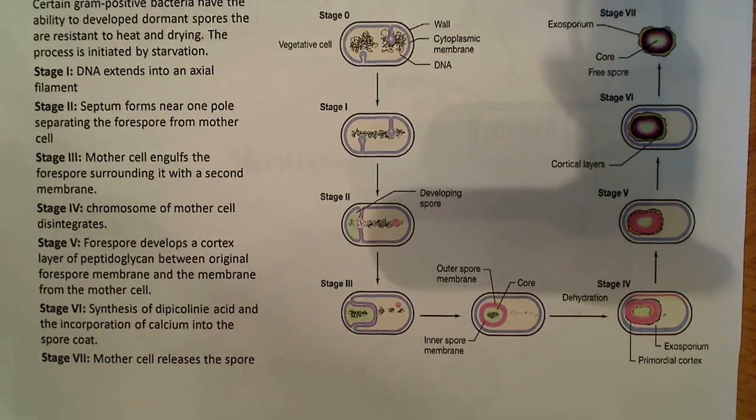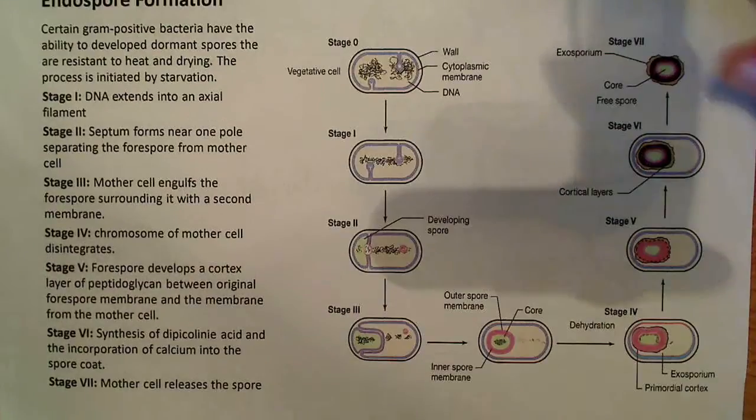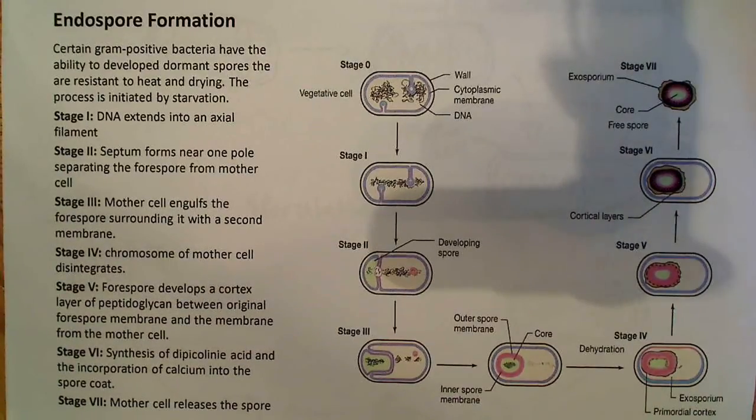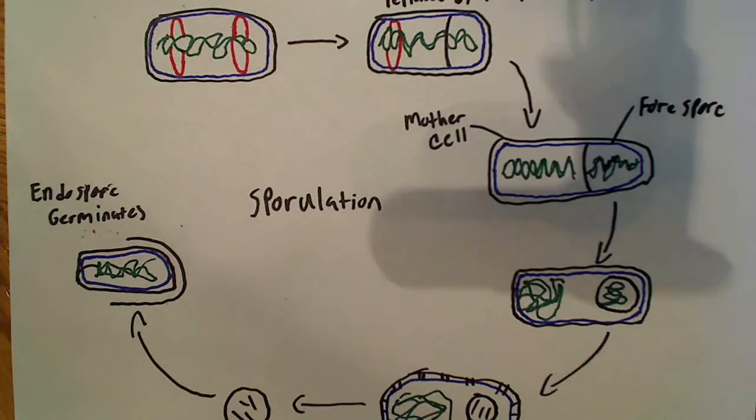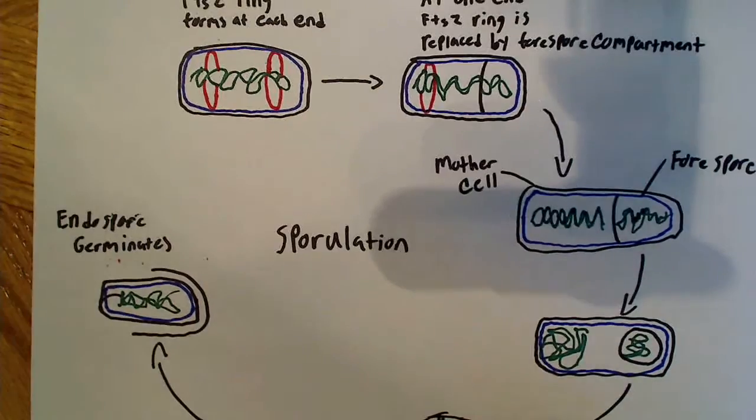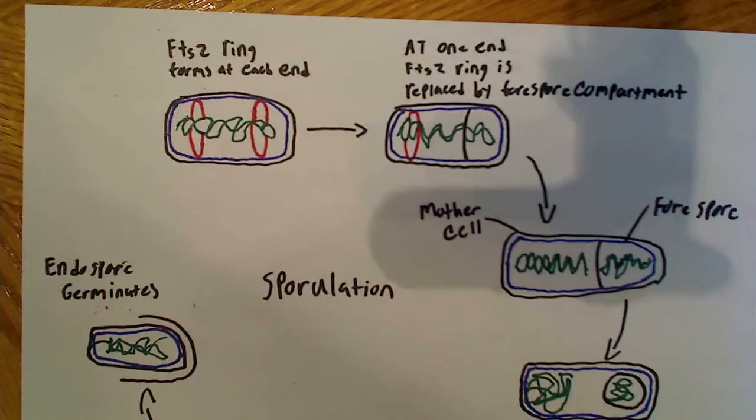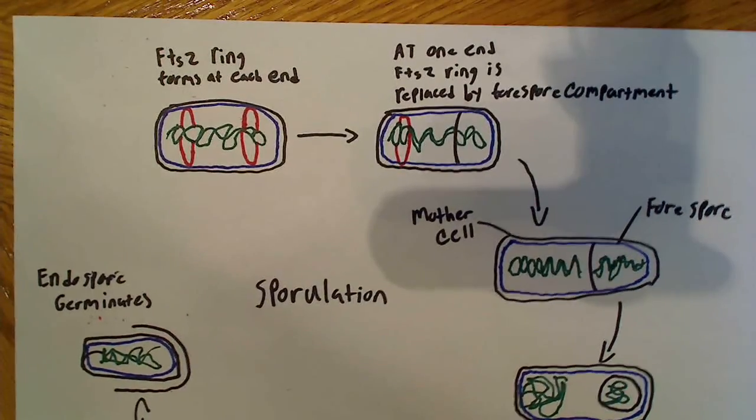And finally, in stage seven, the mother cell releases the spore. So this is maybe a little bit more complex than you might need in order to understand. So I made a separate one here for sporulation, which just kind of has what I feel are basically the essentials.